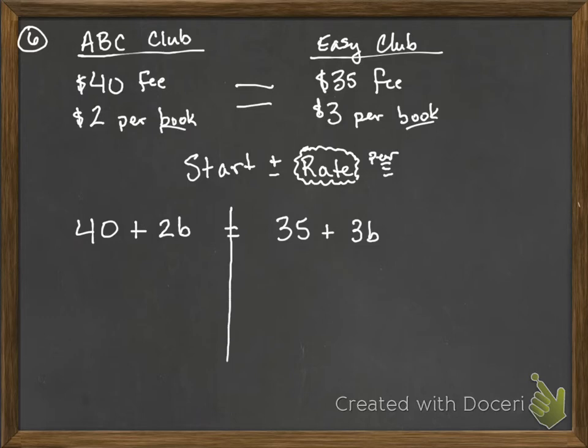So I'm going to solve this equation. I know that I need to get all my B's on the same side. So I'm going to choose to move this 2B over by subtracting. I'm taking the opposite of positive 2B, which is negative 2B.